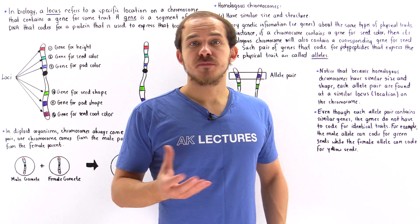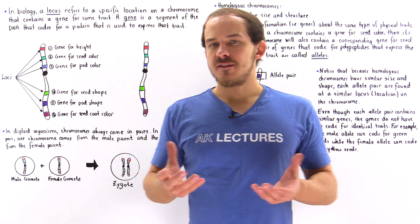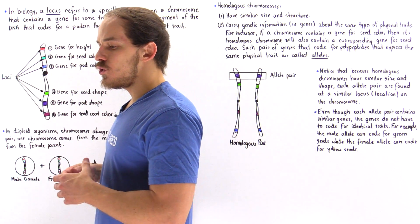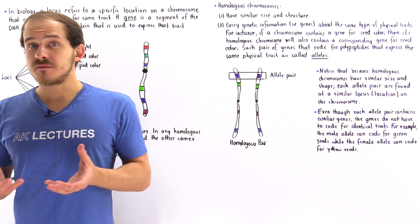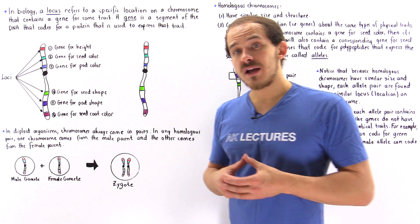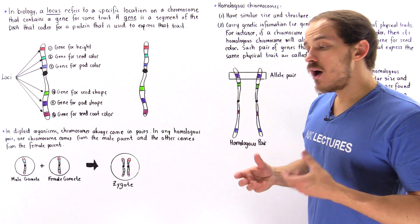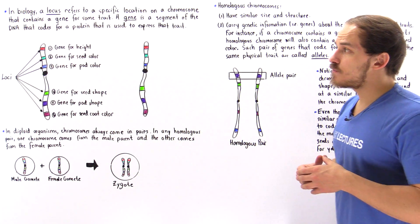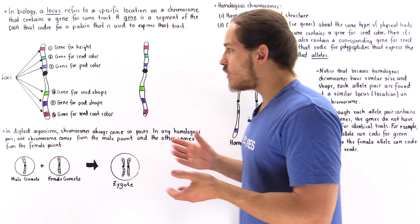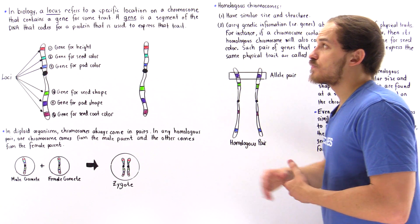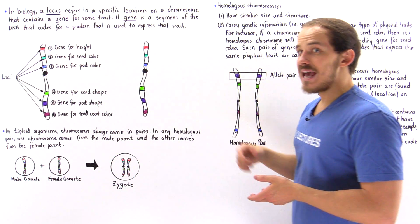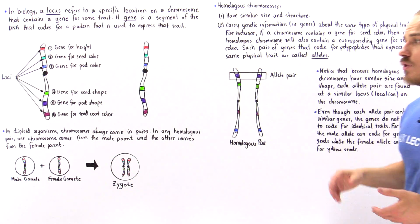In biology, and more specifically in the field of genetics, there are three terms that are constantly being used by scientists, and sometimes these words are used interchangeably. We have something called a locus, we have something called a gene, and something called an allele.